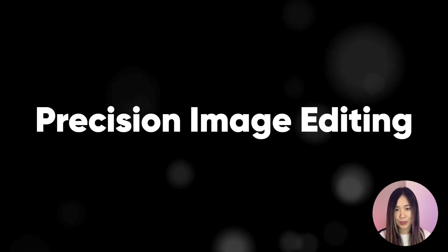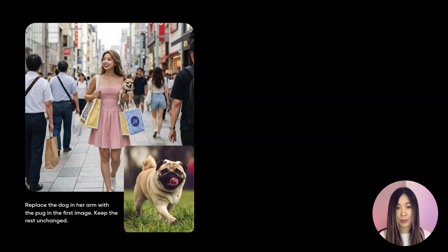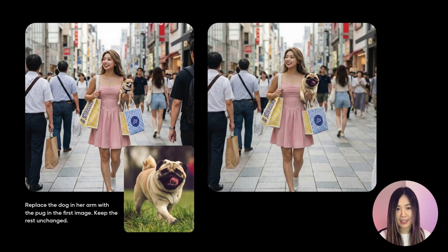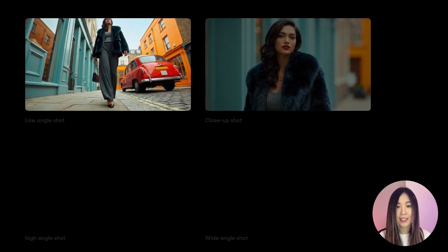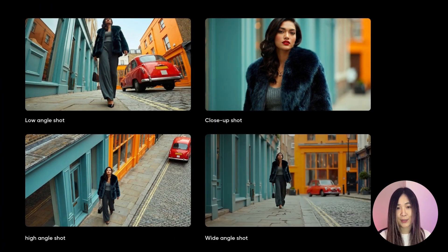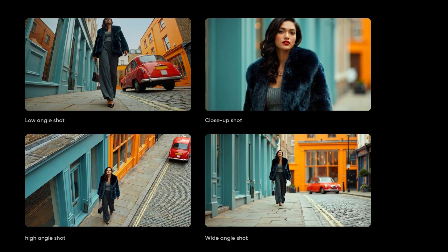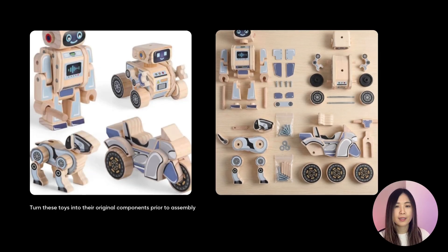Nano Banana Pro gives you full control over the elements inside an image. You can swap clothing, replace objects, change lighting, adjust camera angles, or even break objects apart. This level of control is incredibly useful for any creative edits where you need fast and precise variations without reshooting anything.